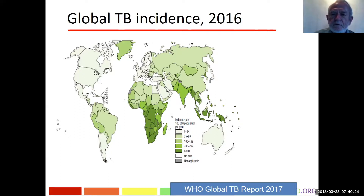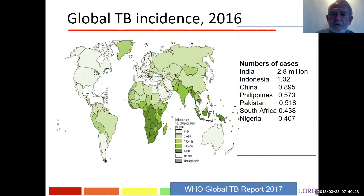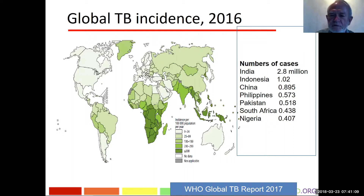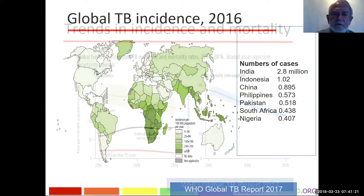Looking at the actual numbers of cases in these countries, the top seven are: India leading at 2.8 million new cases a year — almost a third of total world cases — Indonesia second with just over one million, China with 895,000, the Philippines with 573,000, and Pakistan with 518,000. All of these countries are in Asia. The only two African countries on this list are South Africa at 438,000 and Nigeria at 407,000.